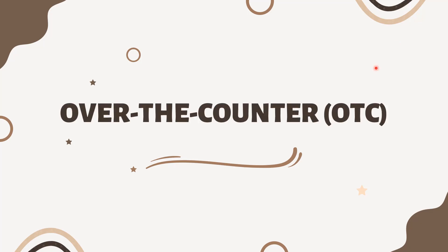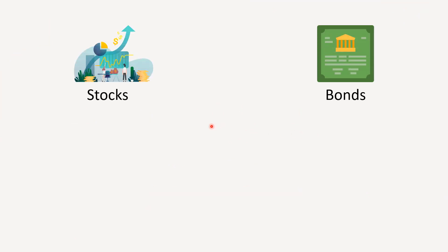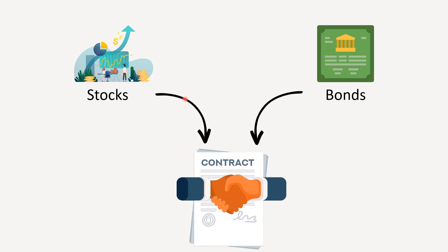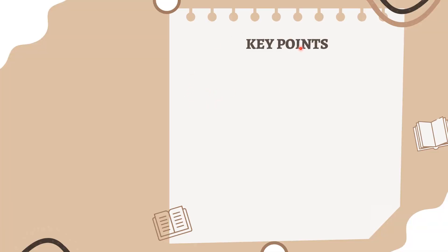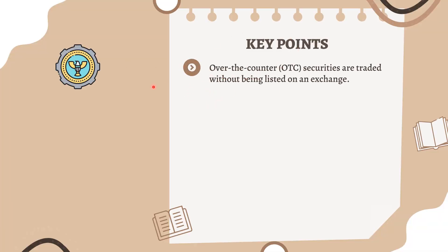Over-the-counter (OTC) is the process of trading securities via a broker-dealer network, as opposed to on a centralized exchange like the New York Stock Exchange. OTC trading can involve stocks, bonds, and derivatives, which are financial contracts that derive their value from an underlying asset such as a commodity. OTC securities are traded without being listed on an exchange.